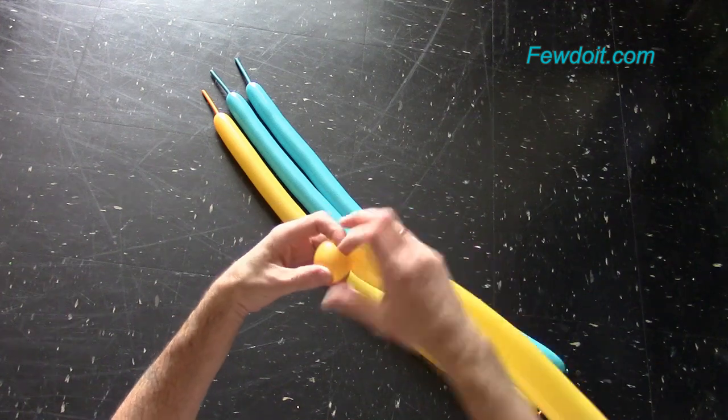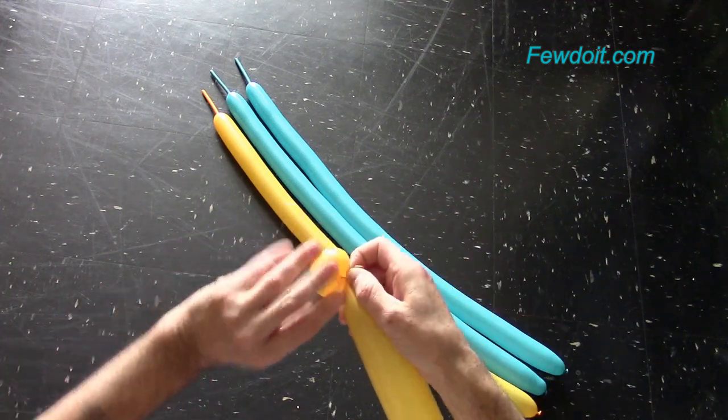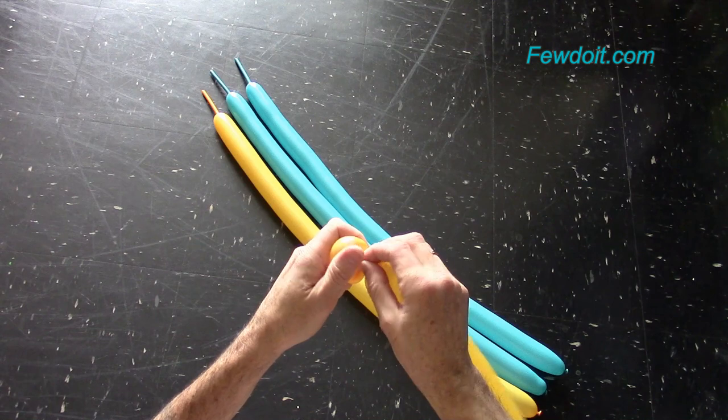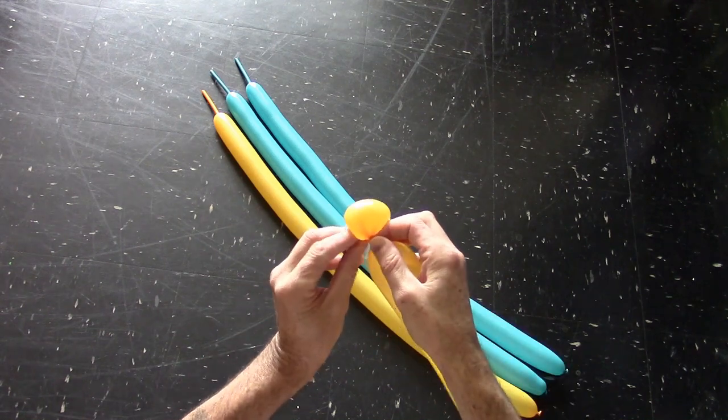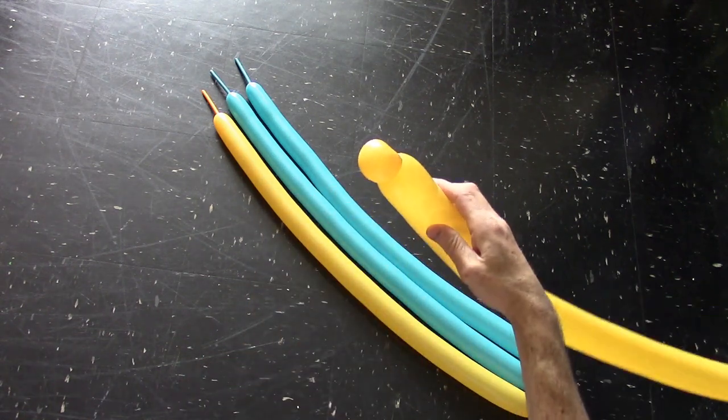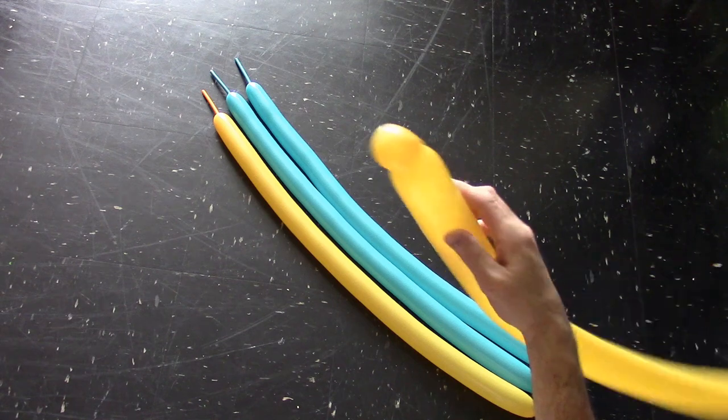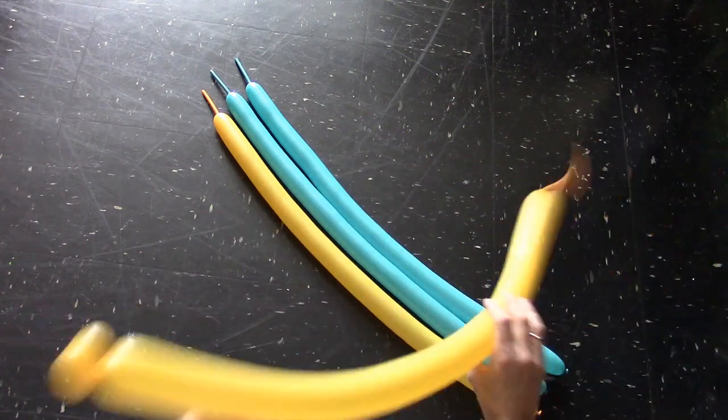Let's twist the first yellow, about 3 maybe 5 cm long bubble. Lock both ends of the first bubble in one lock twist. Now we have to tie nozzles of all other balloons with the first yellow bubble.